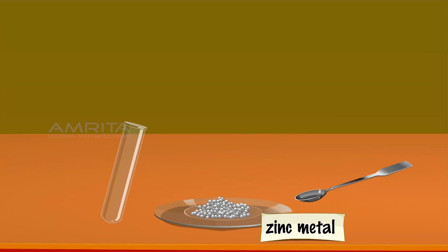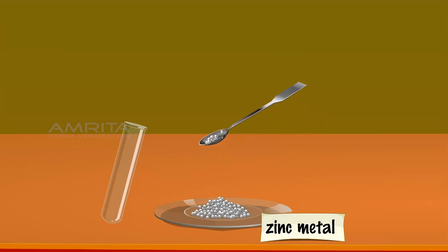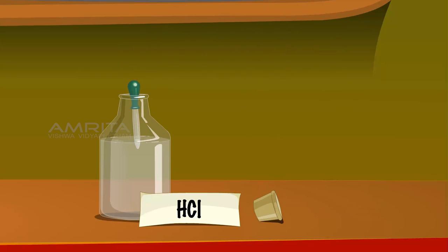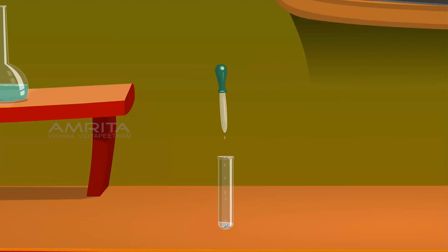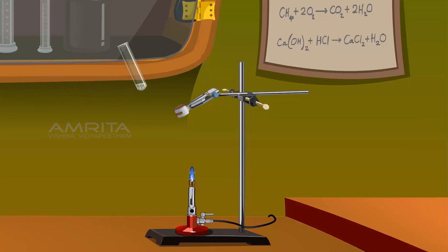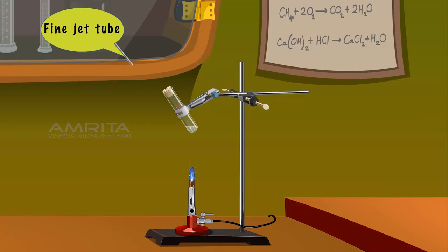Using the spatula, transfer some of the zinc metal from the dish into the test tube. Take a few drops of the HCl solution from its bottle using the dropper and add this to the test tube containing the zinc metal. Clamp the test tube to the stand, then close the mouth of the test tube with the cork and pass the jet tube through the hole in the cork into the test tube.